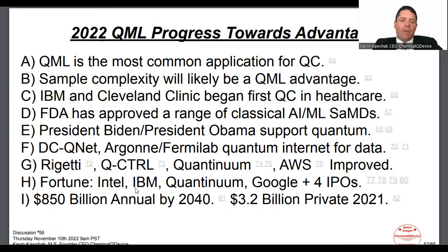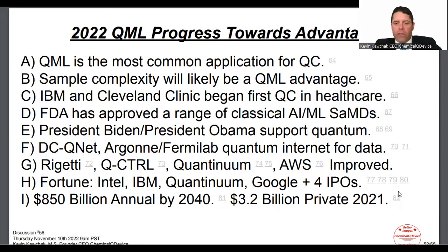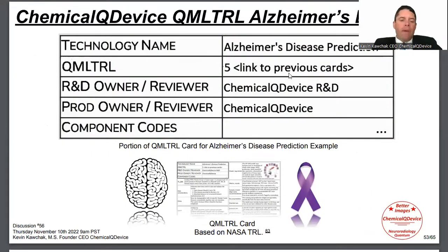IBM has been huge in healthcare, and Google Health too. There have been four IPOs going back to October last year, all at a billion dollars or more — pure play quantum hardware companies. An $850 billion annual value figure from a BCG report projects that by 2040, $850 billion in value will be due to quantum. Last year, $3.2 billion in private funding went to quantum technologies. This is based on an ML TRL NASA article previously reviewed, and things are just going to go quantum.